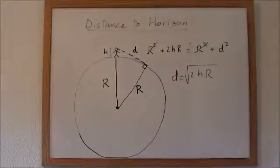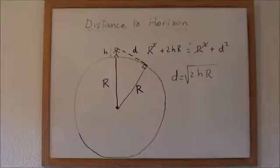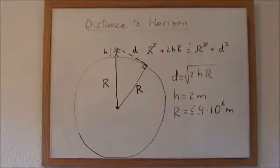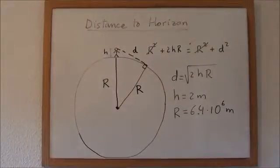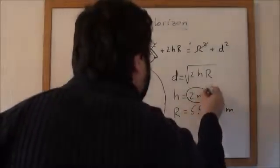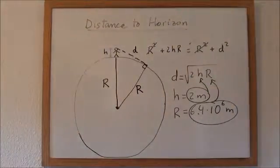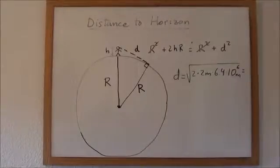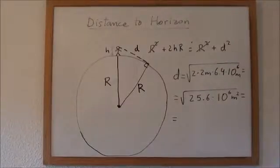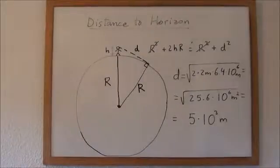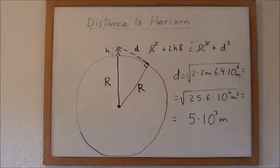If we are just standing on our feet, then the distance, the height h, would be about 2 meters, or maybe less than that. And the radius of the earth is the same, 6.4 times 10 to the 6th meters. We will replace those now. And this gives us 25.6 times 10 to the 6th square meters, which is more or less 5 times 10 to the 3rd meters, or 5 kilometers.